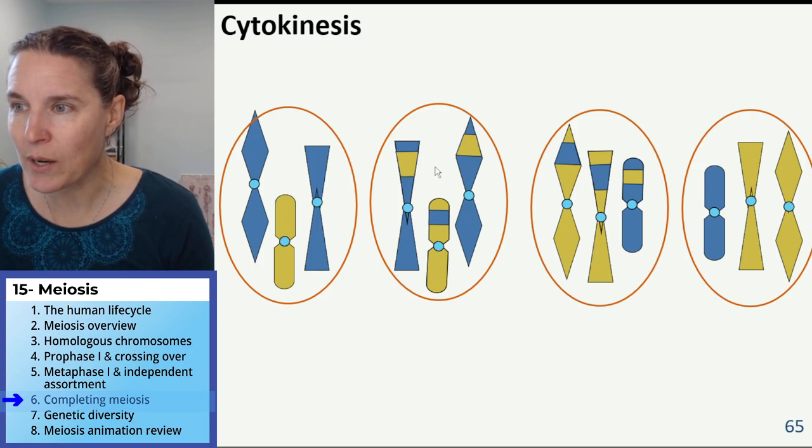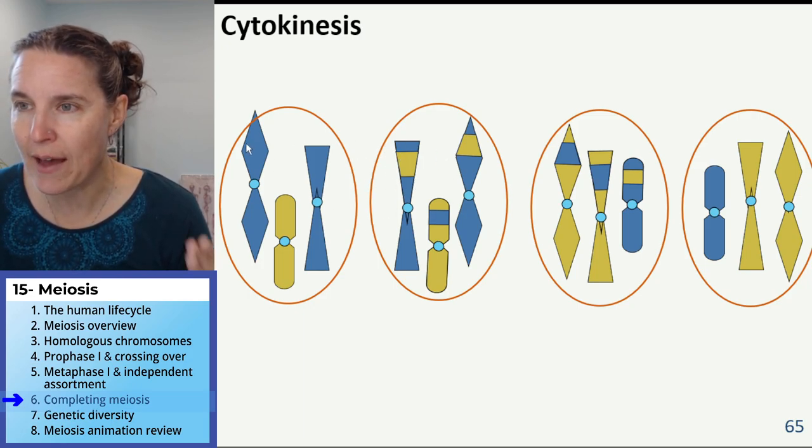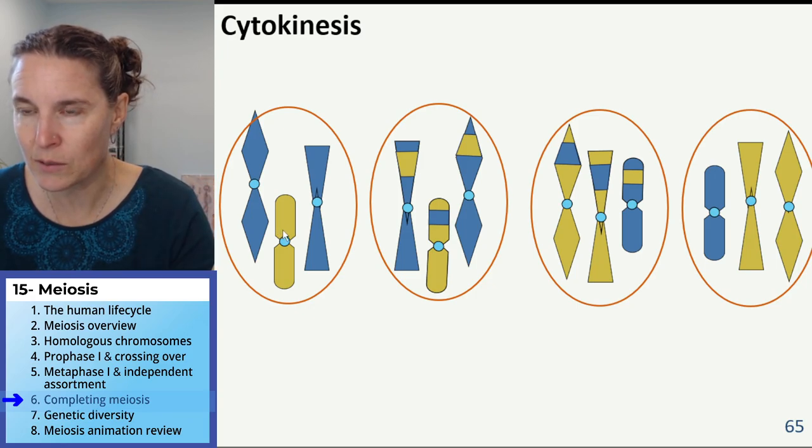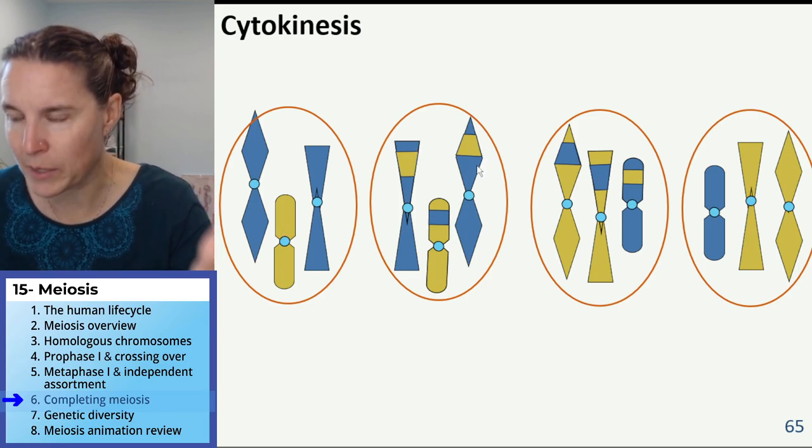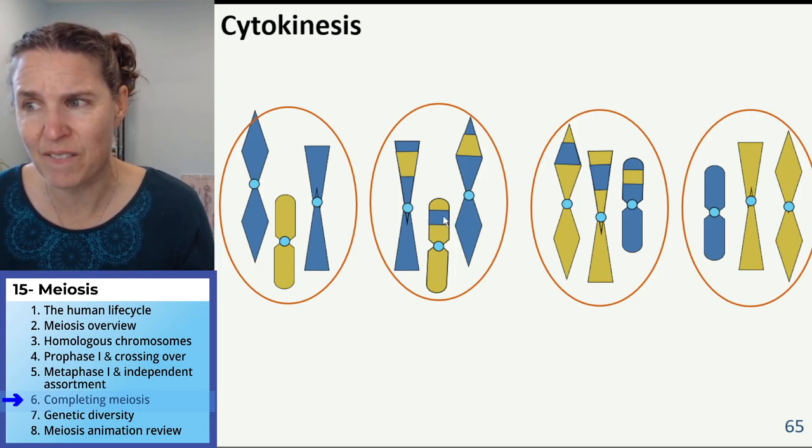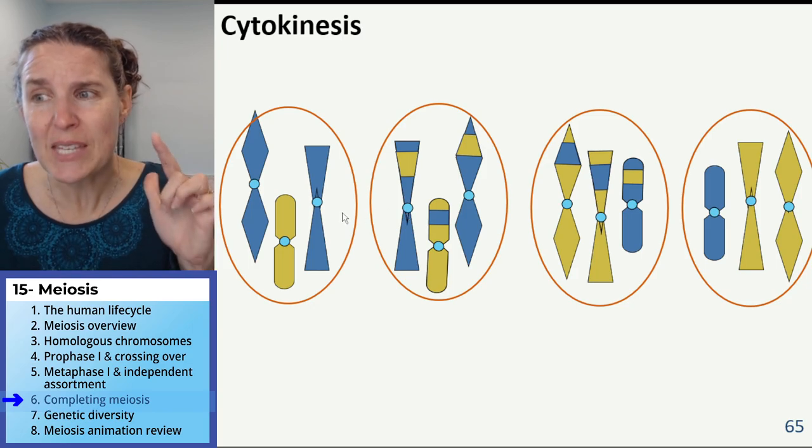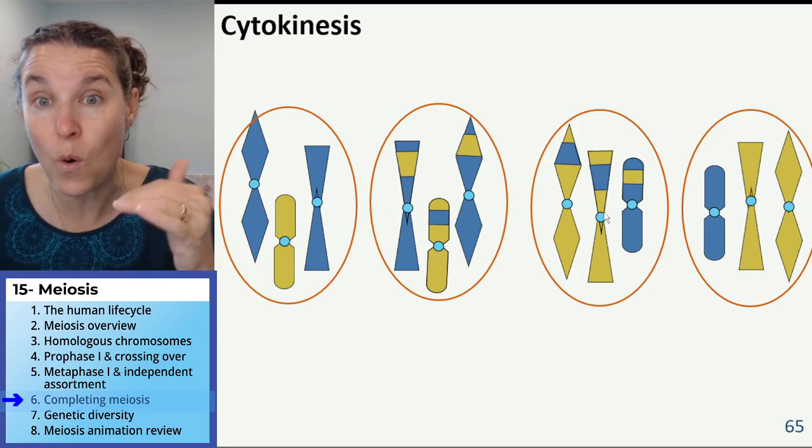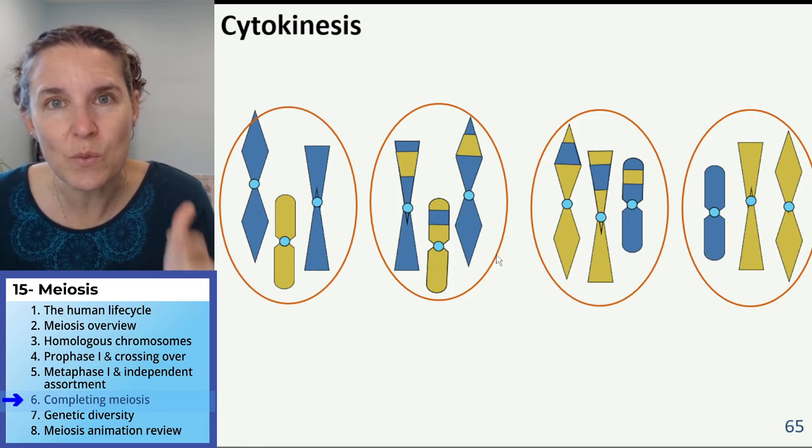Even this one. These two right here both have big blue, big blue, little yellow. Big blue, big blue, little yellow. But crossing over occurred in one of them. So they actually have a mix of alleles. Each one of these gametes, whether these are sperm or eggs, each one is unique.